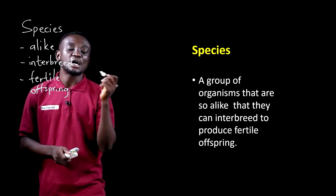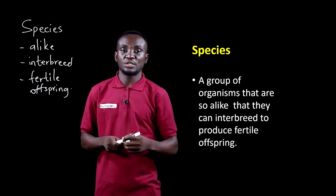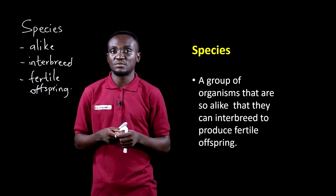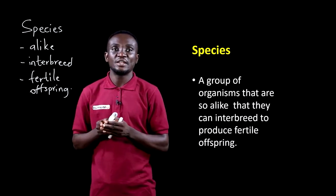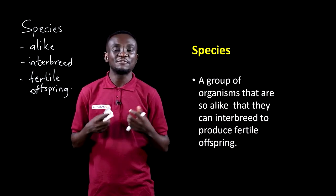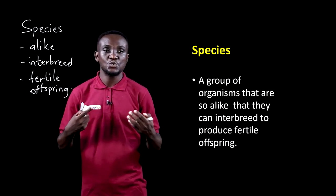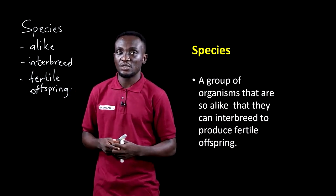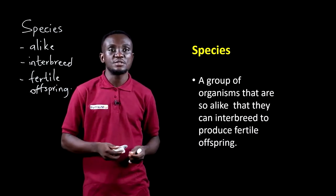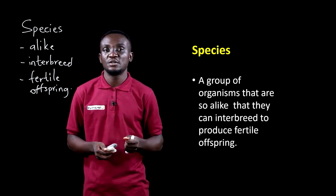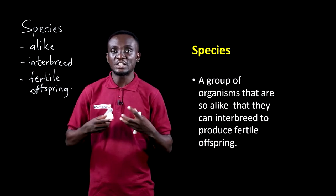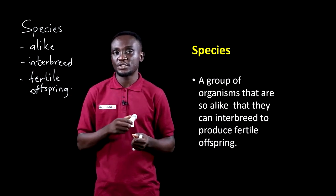So two animals that cannot produce fertile offspring when they mate are of different species. Like a cat and a dog — they belong to two different species. An elephant and a horse are also two different species. But when you take a male human being and a female human being, they are the same species of living organisms and can interbreed to produce fertile offspring.